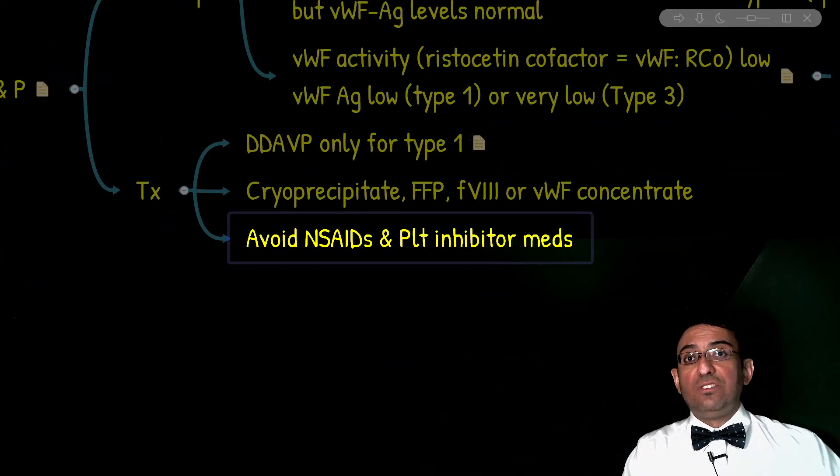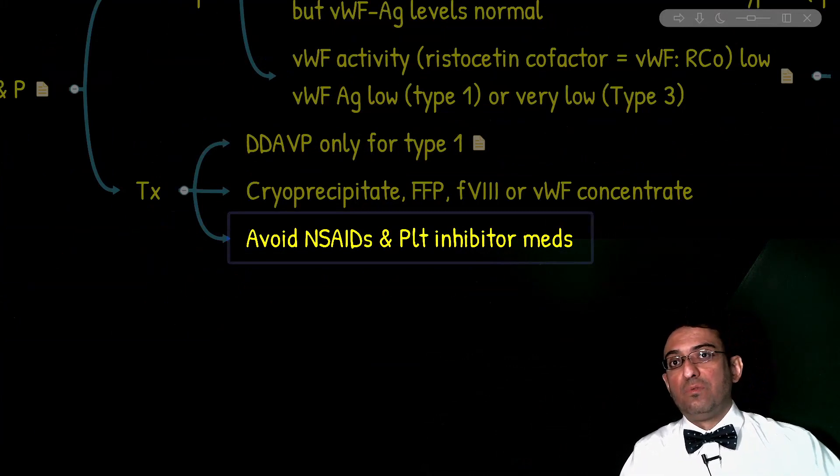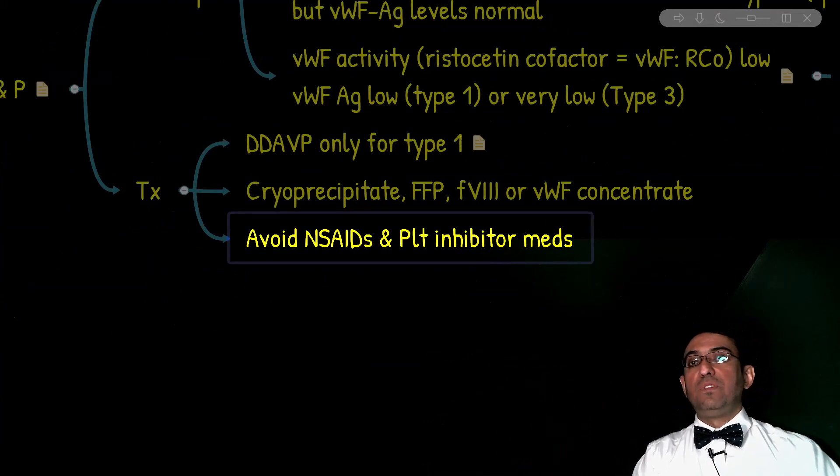And finally, conditions that increase estrogen or thyroid hormones can increase the levels of von Willebrand factor, including pregnancy, OCPs, and hyperthyroid patients. These patients may have masked von Willebrand disease. Okay, this finishes our discussion of von Willebrand disease.